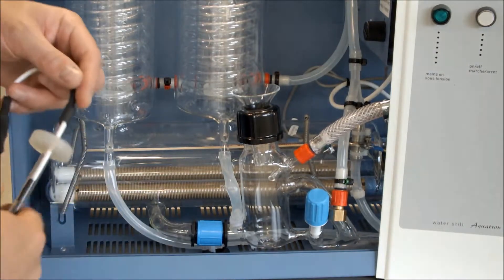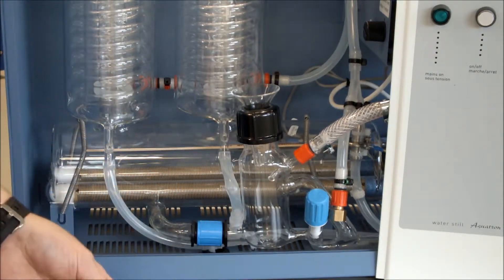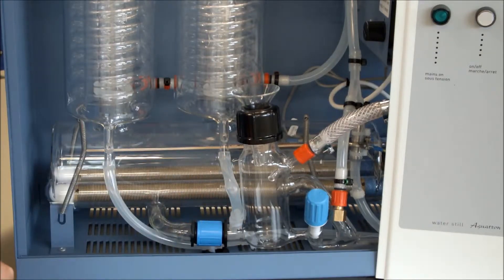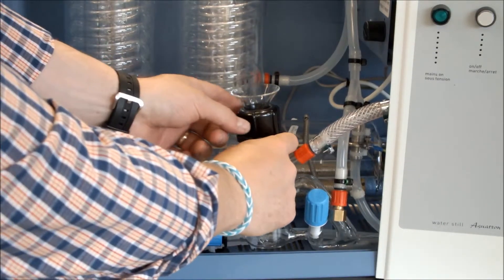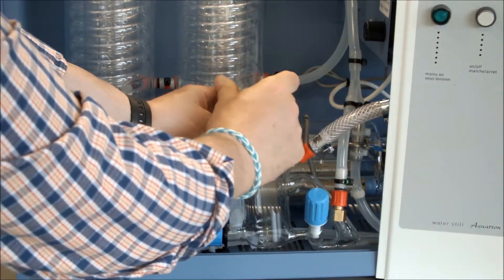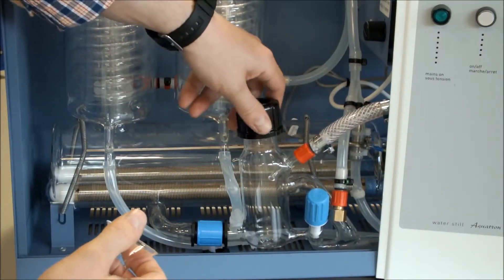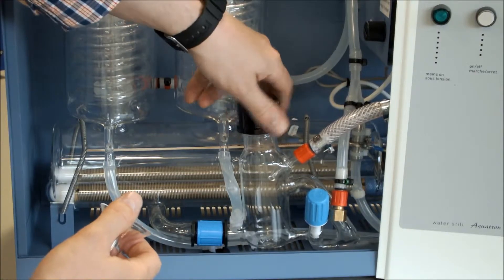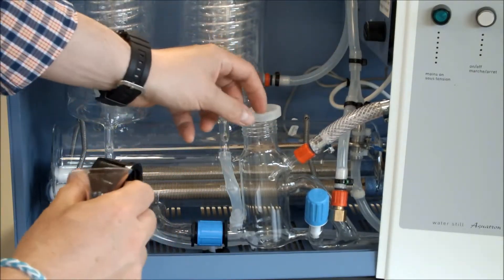You then fit our float switch assembly to our controller. First of all, we undo the black cap, and we can release the funnel and remove the black cap, like so.